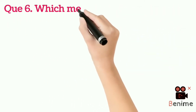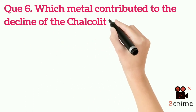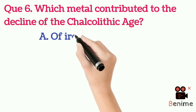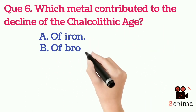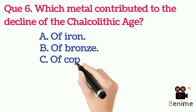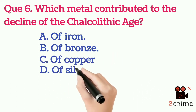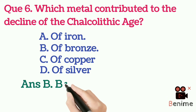Question 6: Which metal contributed to the decline of the Chalcolithic age? A. Iron. B. Bronze. C. Copper. D. Silver. Answer B: Bronze.